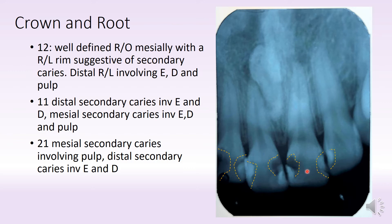Then moving on to 2-1, you also see that there is a large secondary caries — a radiolucency surrounding the radiopacity on the mesial surface — which is again indicative of secondary caries involving the pulp of the tooth.